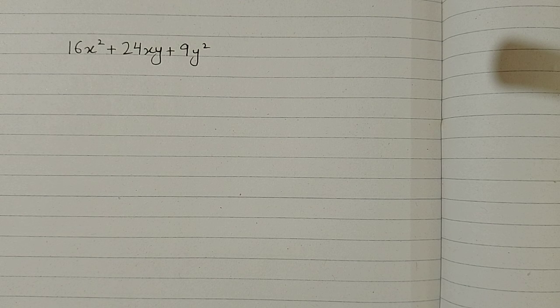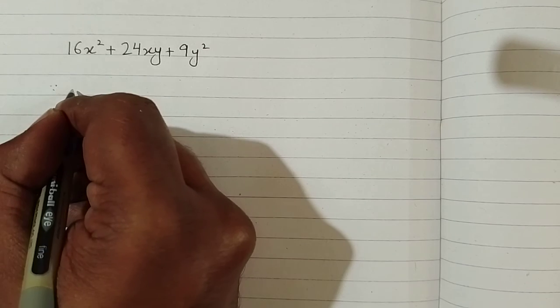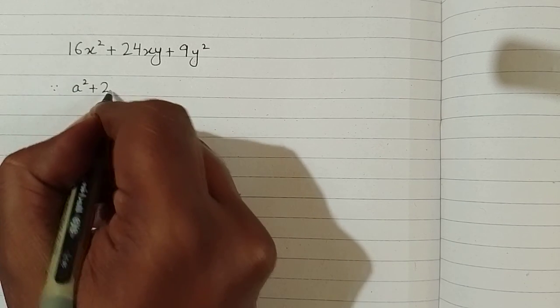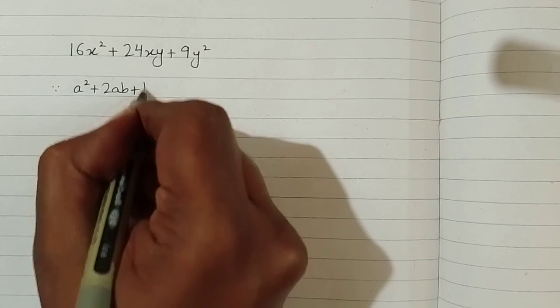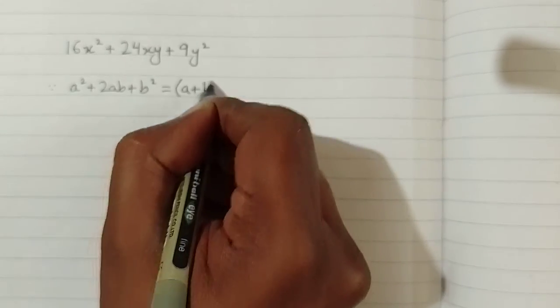In this video we will factorize 16x² + 24xy + 9y². In order to factorize this expression we can use an algebraic identity which is a² + 2ab + b² = (a + b)².